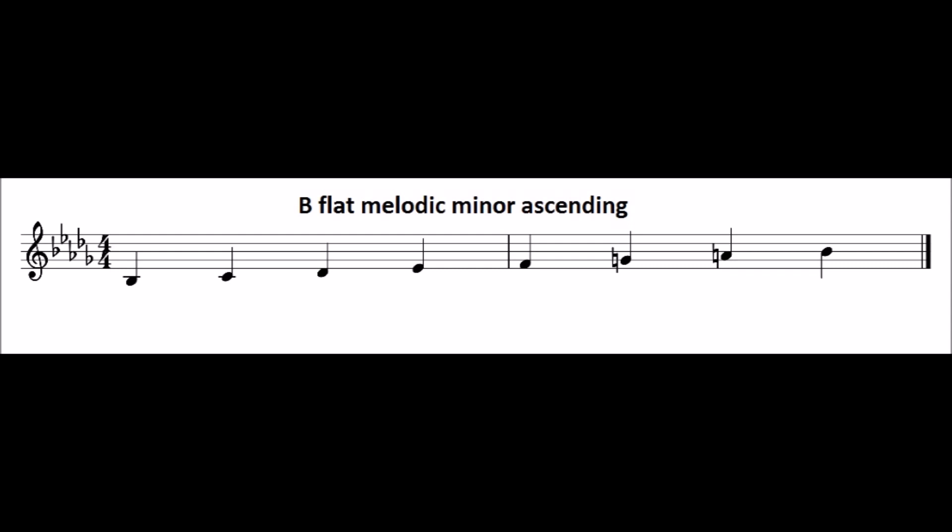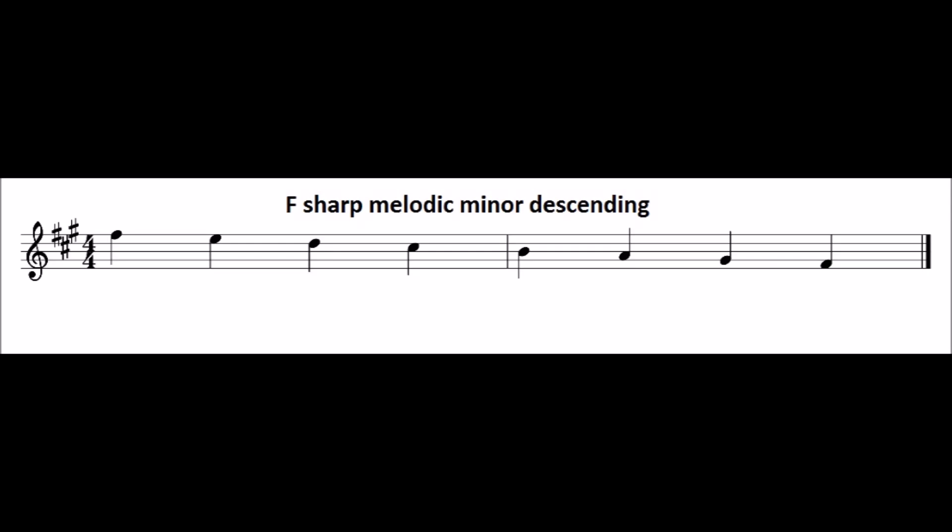Now try F-sharp melodic minor descending, going down. The key signature of F-sharp melodic minor is three sharps: F-sharp, C-sharp and G-sharp. Melodic minors only raise the sixth and seventh notes on the way up, so going down, you do not need to add any extra accidentals.